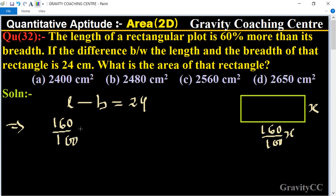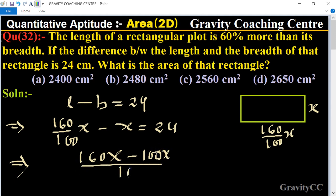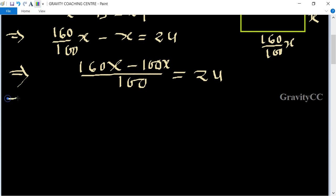This implies that 160x minus 100x upon 100 equal to 24, which implies that 60x upon 100 equal to 24.